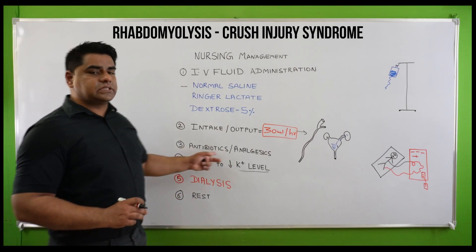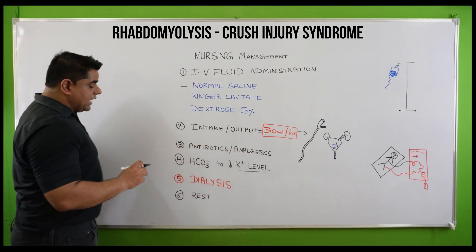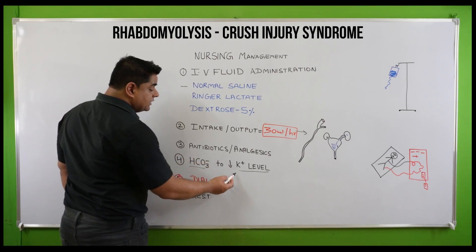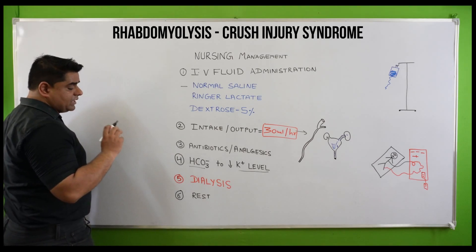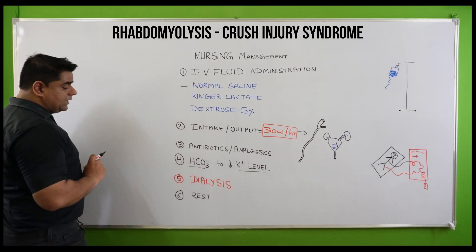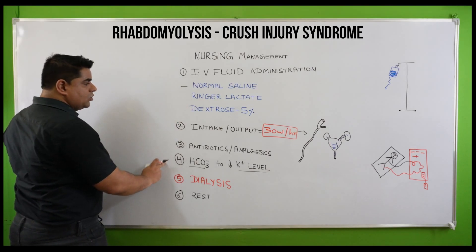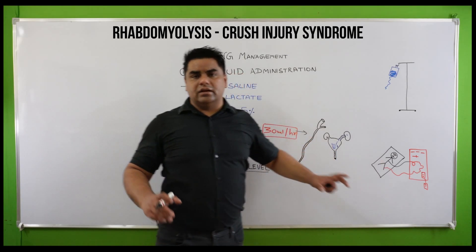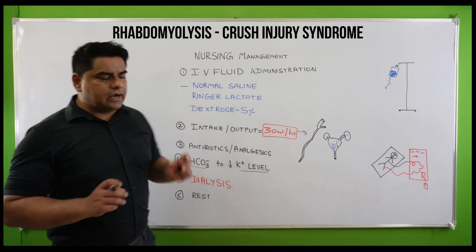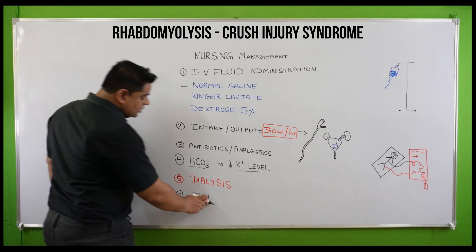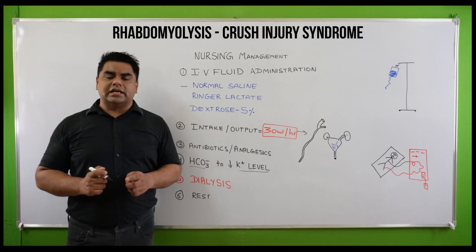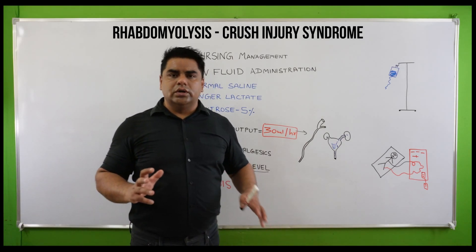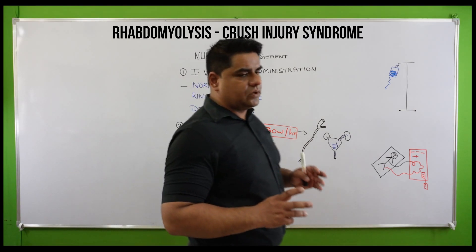To treat bacterial or viral infection, administer antibiotics and analgesics. Most importantly, administer bicarbonates to neutralize the increased potassium level, as potassium is dangerous for the heart. If all treatment options don't show positive results, go for hemodialysis or peritoneal dialysis, in which the dialyzer removes the increased potassium and myoglobin levels. For health education, educate the patient about rest — more rest means less skeletal muscle activity, less potassium release, and less myoglobin release.